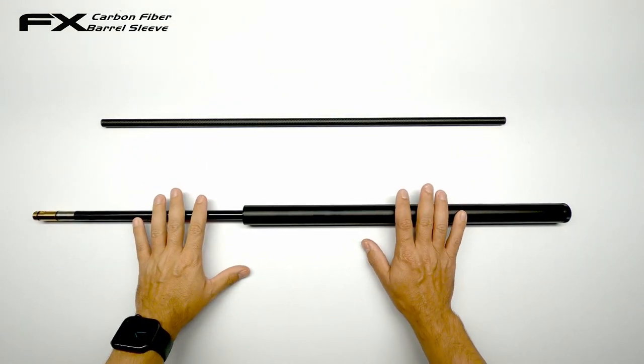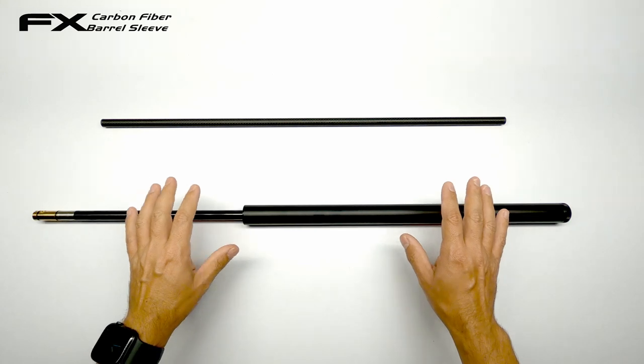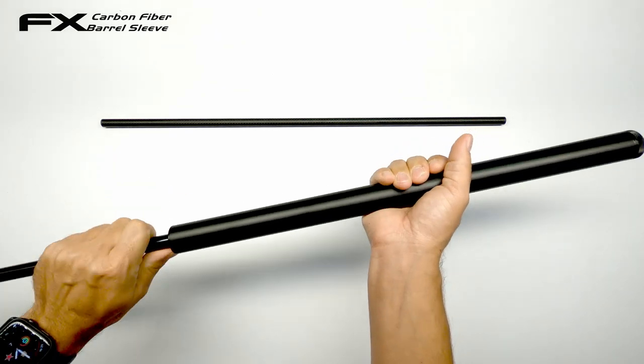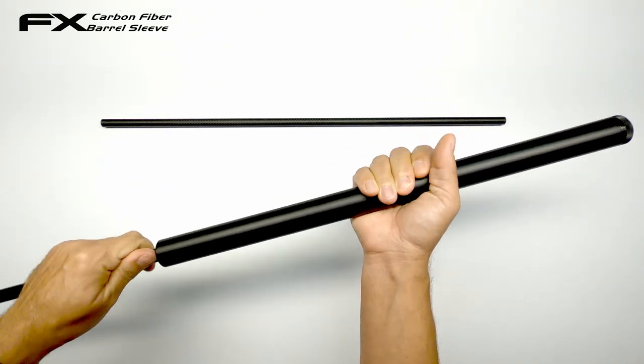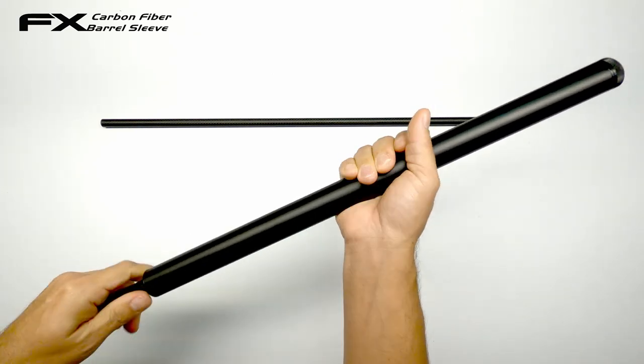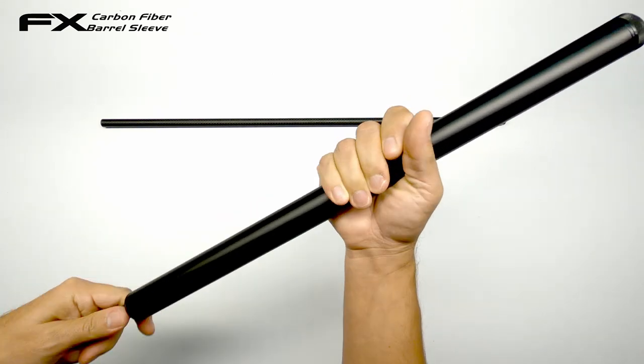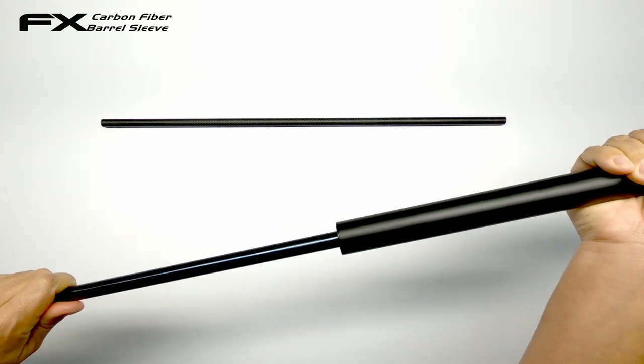So I have my 700 millimeter 22 caliber OEM barrel and the first thing you do is simply undo your shroud. Slide it off.